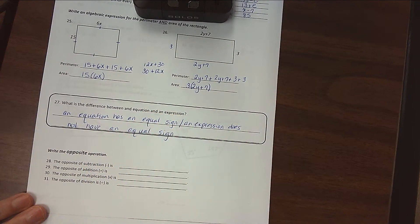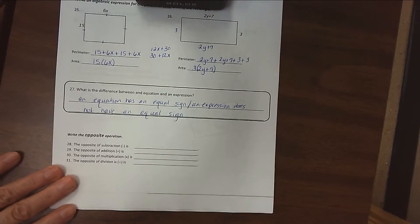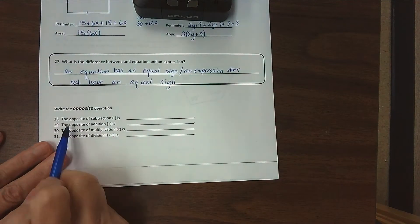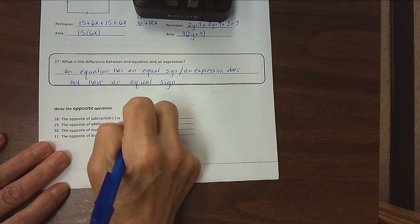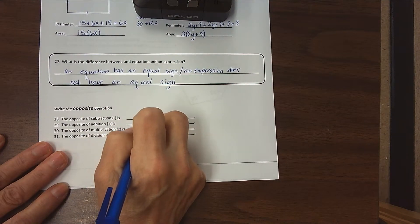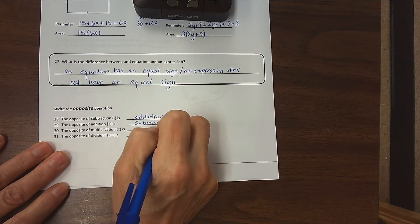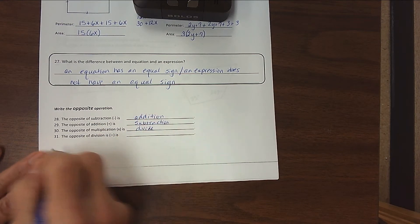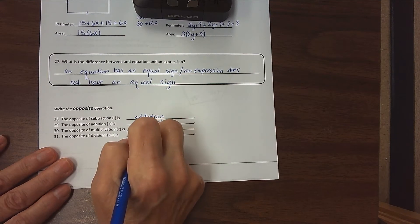All right, so we want to write the opposite operations here. We need that because we're getting ready to solve some equations. We want to remember to do opposite operations. So the opposite of subtraction is addition. The opposite of addition is subtraction. The opposite of multiplication is divide, and the opposite of division is multiply.